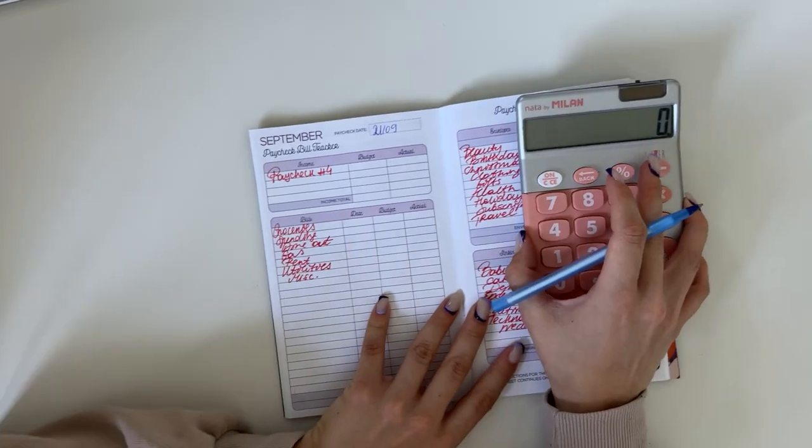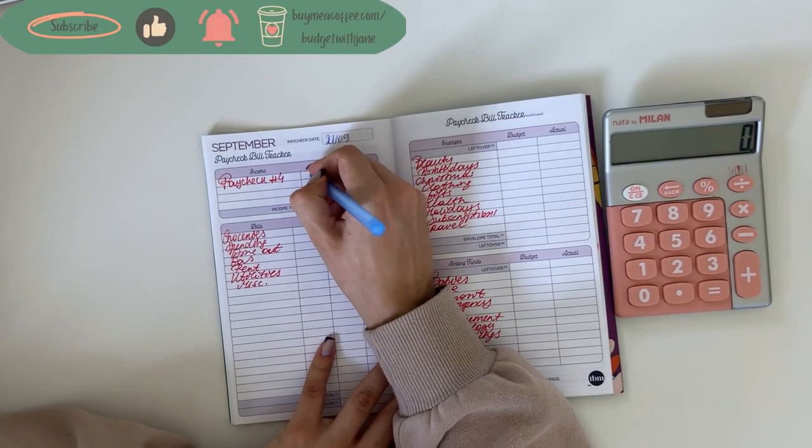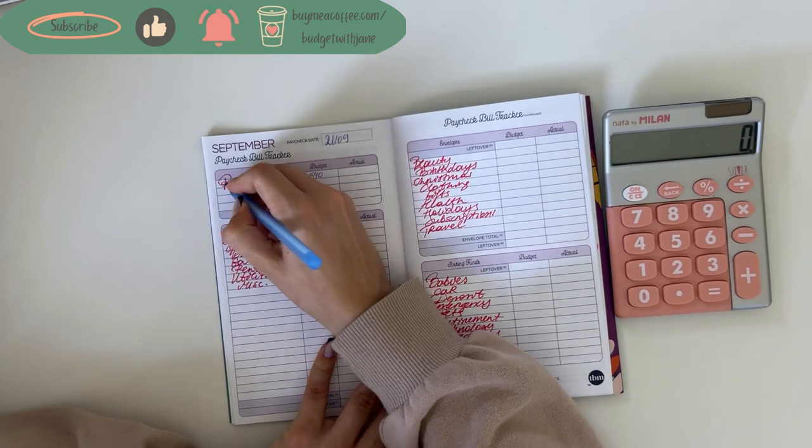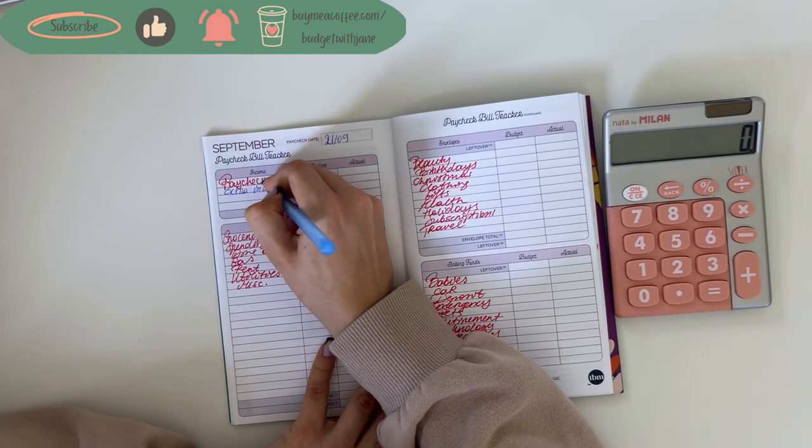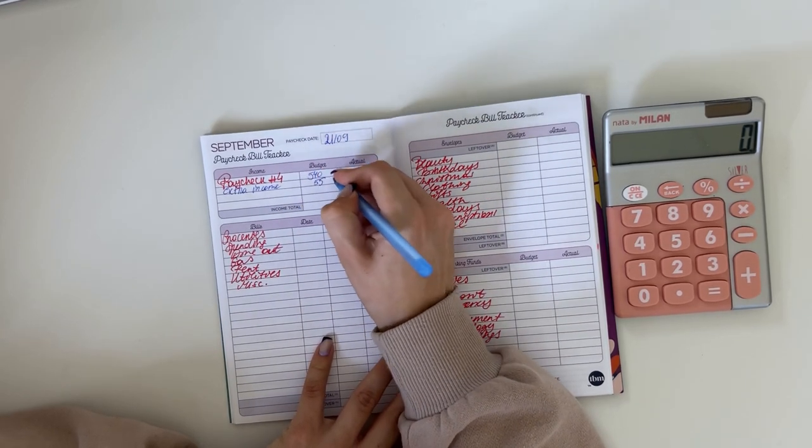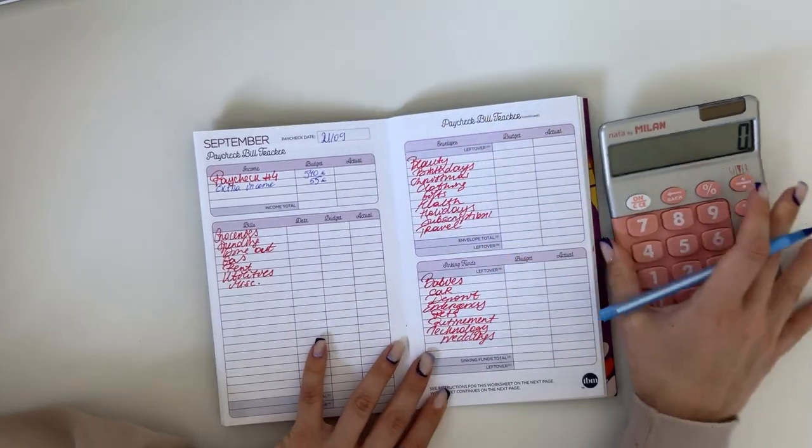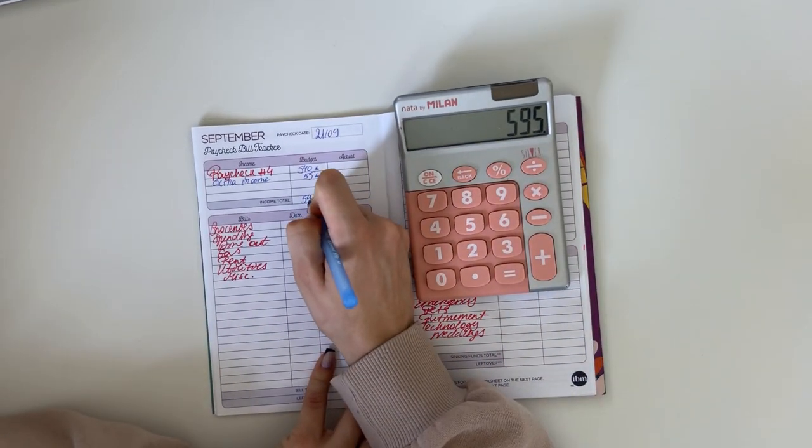We are starting week four and setting up the budget. Our paycheck is 540 but then we have some extra income which I got from a translation I do, which was 55 euros. So in total 540 plus 55 is 595, one of the higher weeks we've had.